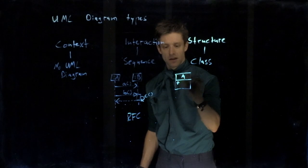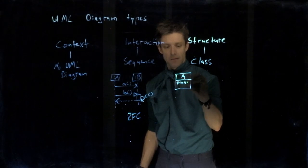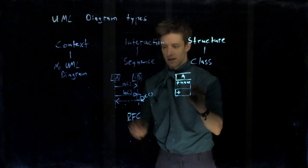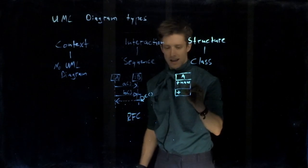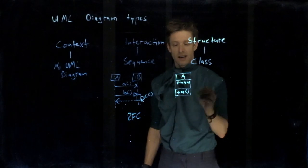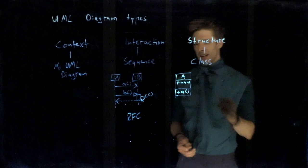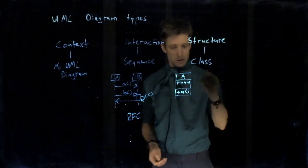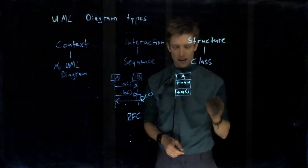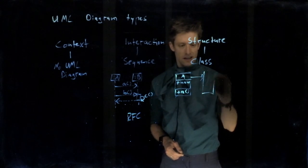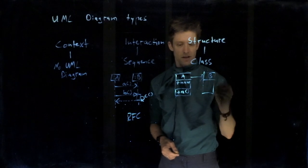We have these boxes that describe different classes. They might have attributes, for example, name. They might have operations. You can add things like types, parameters, return values. You can have interfaces, you can have abstract classes. There are a lot of options and we have associations between classes that describe how they relate to each other.